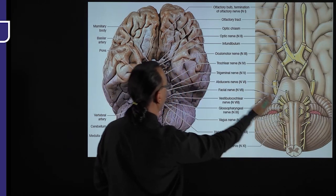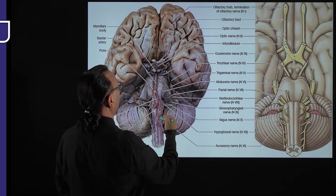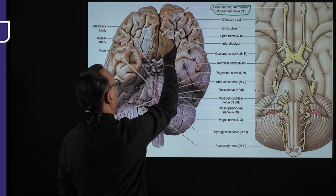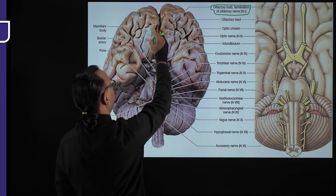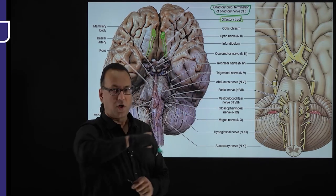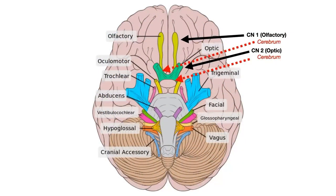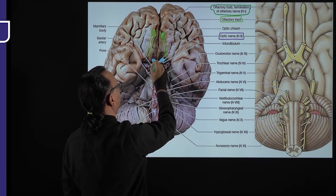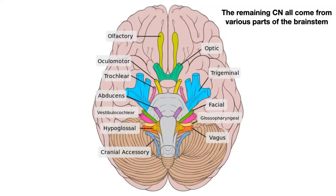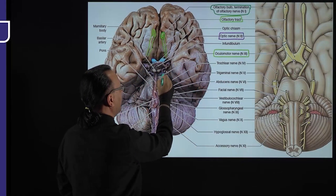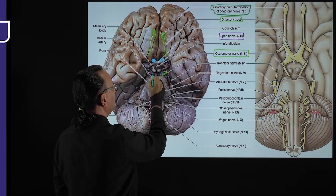Now we look at the actual dissected brain specimen in the same antero-inferior view, using the schematic diagram to identify the cranial nerves. The olfactory nerve arises from the roof of the nasal cavity, synapses in the olfactory bulb on both sides, and the olfactory tract continues toward the cerebrum. The optic nerve, cranial nerve 2, is also evident. Cranial nerve 3, the oculomotor nerve from the midbrain, is marked on both sides.